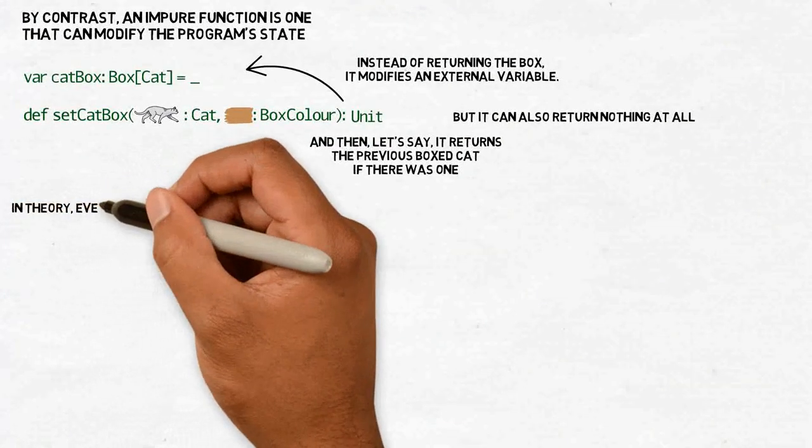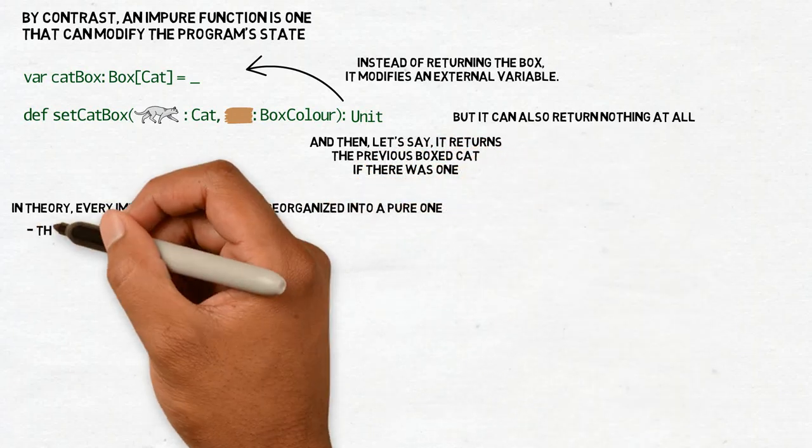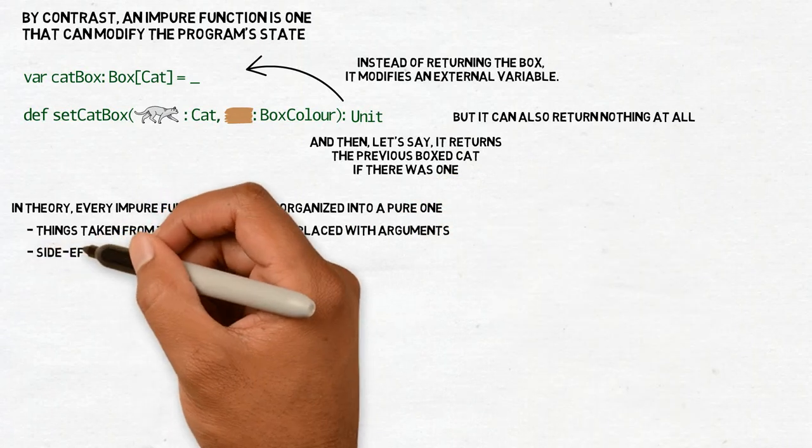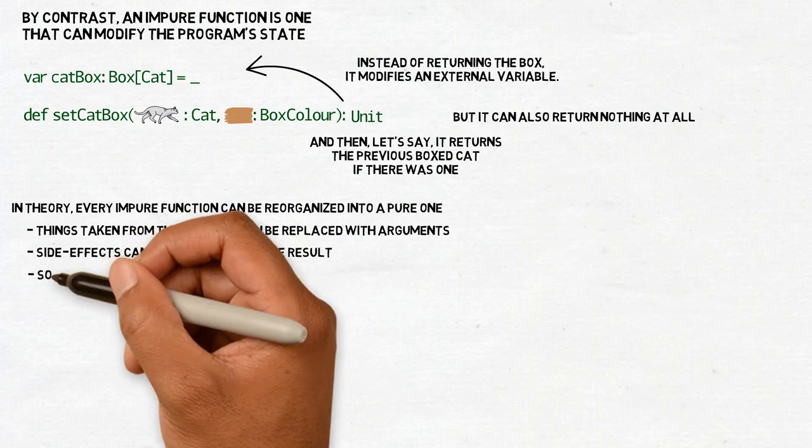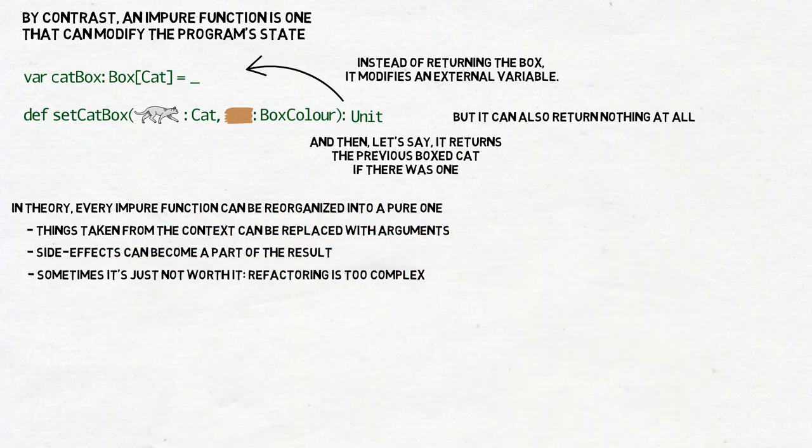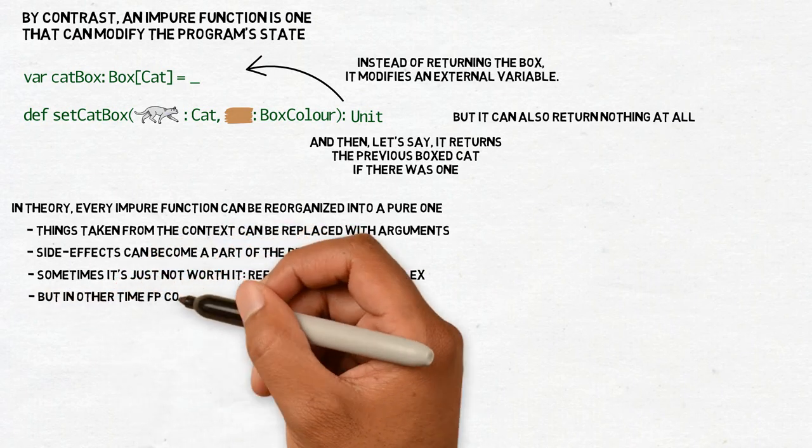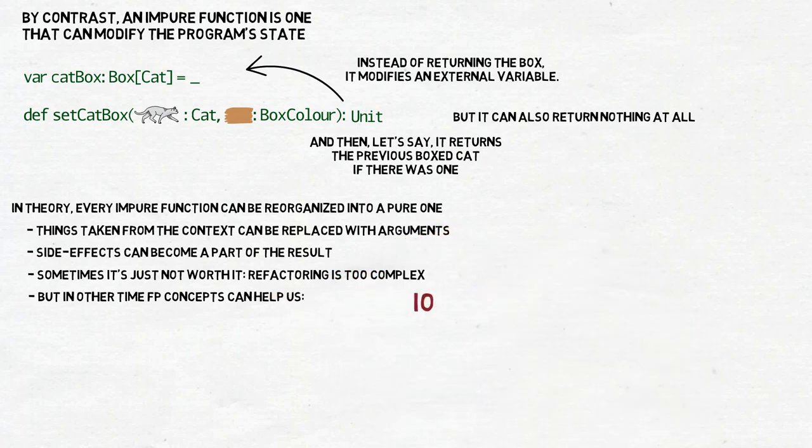In theory, every impure function can be reorganized into a pure one. All things taken from the context can be replaced with arguments. Whatever side effects we perform can become a part of the result. Sometimes, though, the amount of required work is so big and the resulting code is so complex that it's not worth it. But it is possible, and a growing number of libraries in FP-oriented languages try to make it easier for programmers.